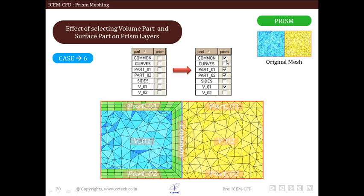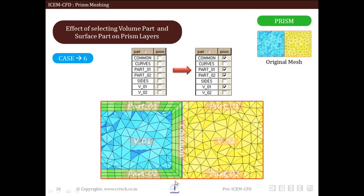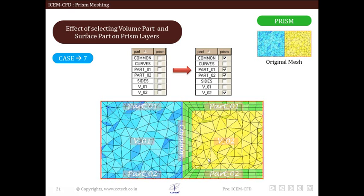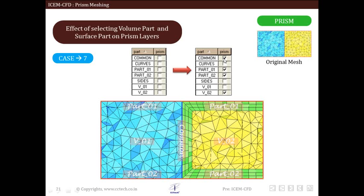In the next case, we select all three surfaces — Common, Part 01, and Part 02 — and select Volume 01 only. The prism layer is created only in Volume 01 and there is no prism layer in Volume 02. Then, doing the opposite, we select all three surface parts and only Volume 02, and the prism layer is created only in Volume 02 with no prism layer within Volume 01.